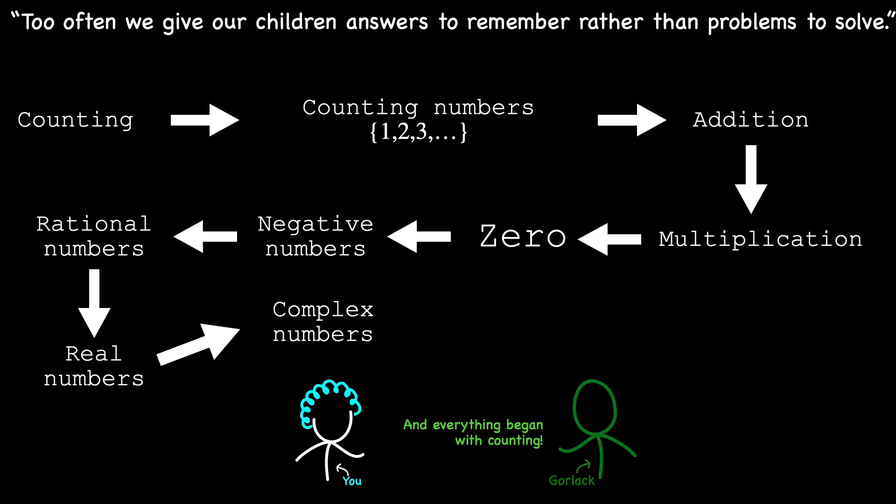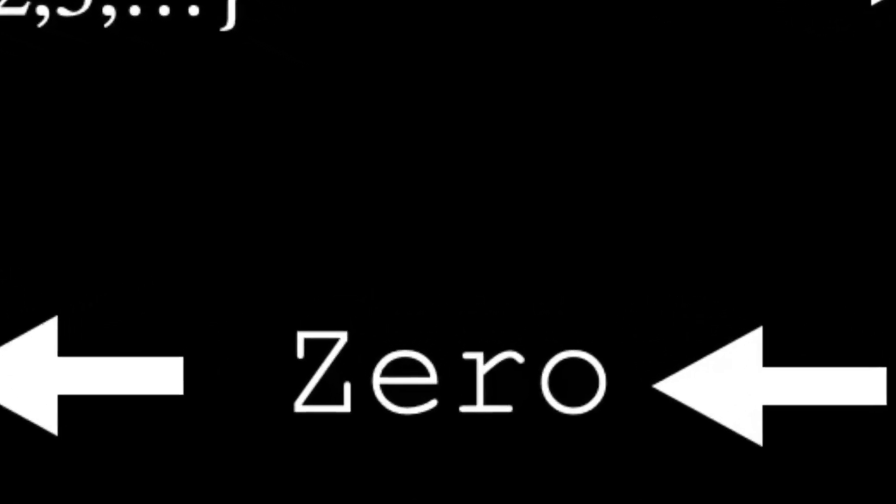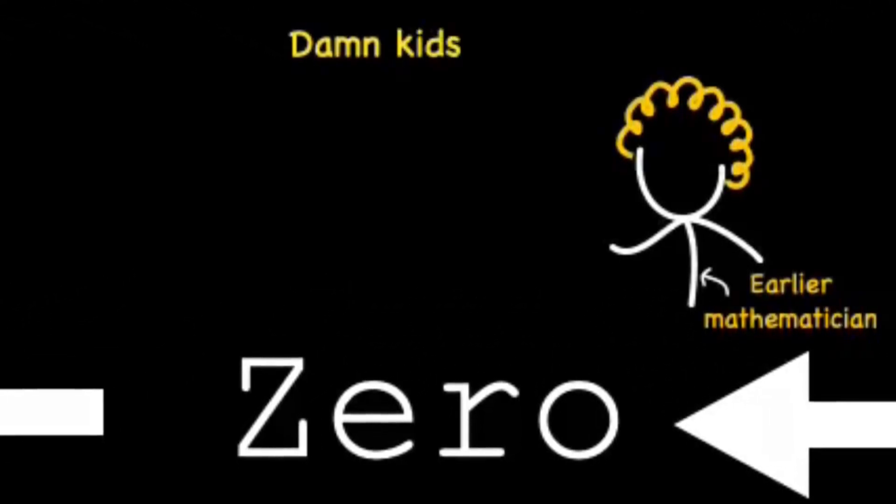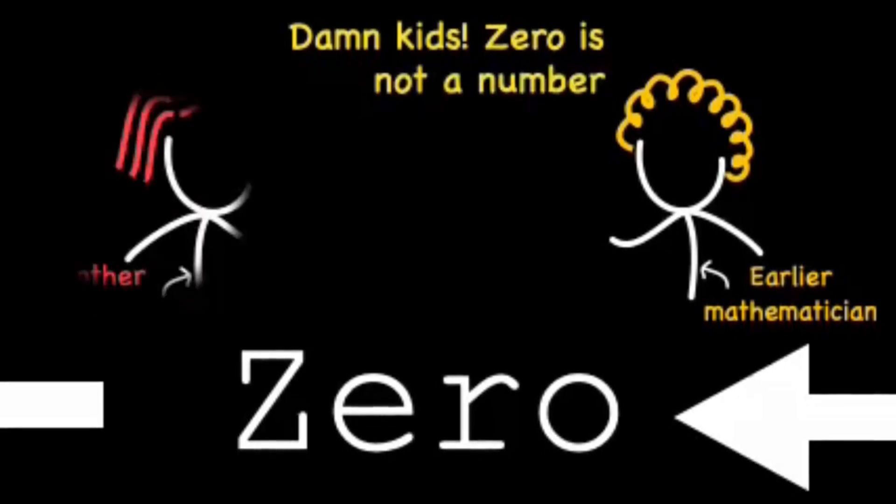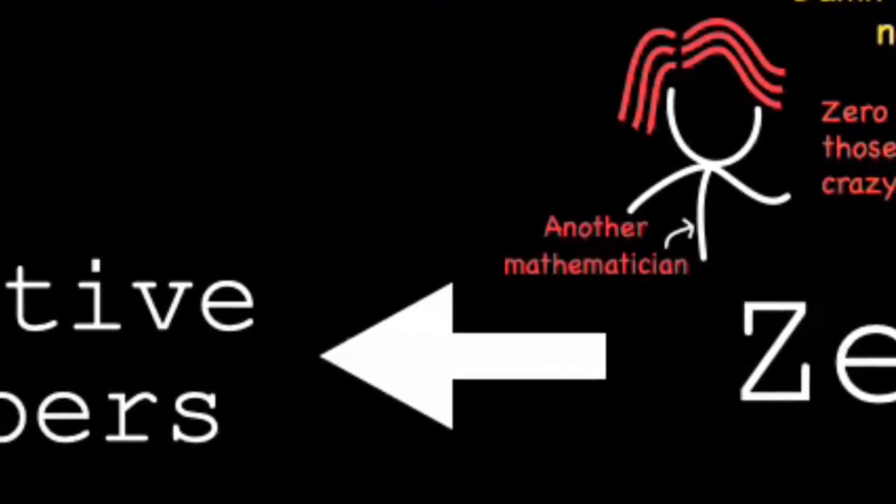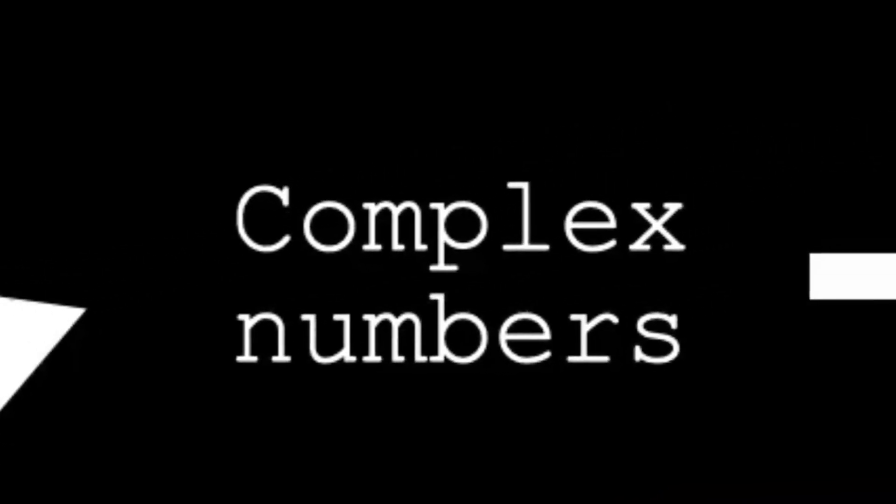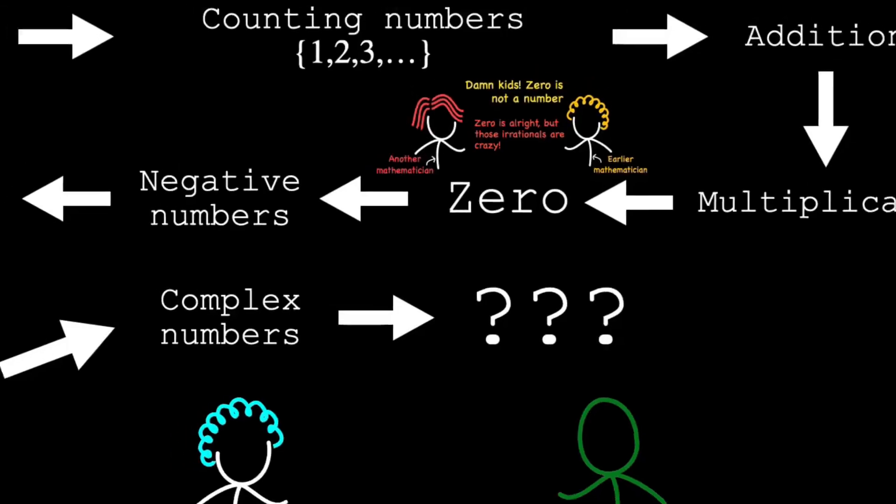Each new type of number faced initial skepticism, but their proven usefulness led to their gradual acceptance and integration into mathematics. Zero, for example, once seemed nonsensical to earlier mathematicians. But now, it's hard to imagine math without it. What about negative numbers, or irrational numbers like square root of 2? Each was once controversial, yet today they are fundamental. So, what kinds of numbers might seem strange or controversial now, but will be indispensable in the future?